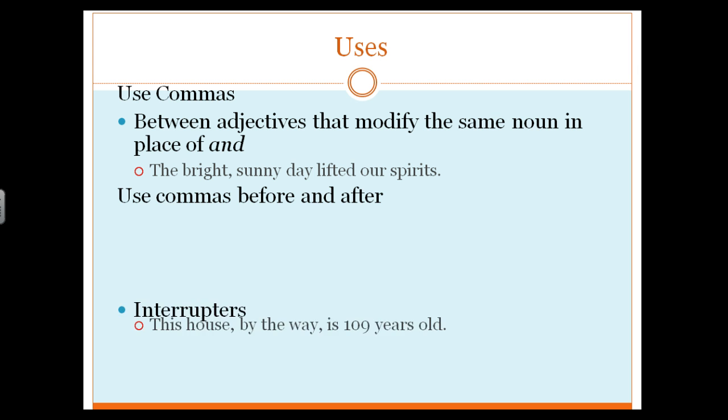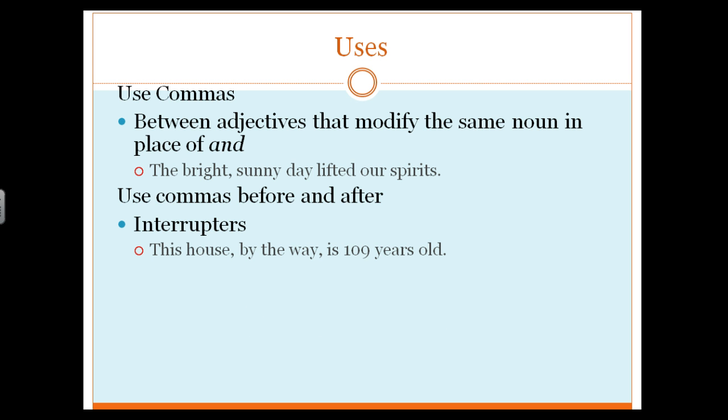We use commas before and after interrupters. Phrases such as by the way, on the other hand, that sort of thing. Especially if it's between simple subject and the predicate. Great place for us to go ahead and drop interrupters in. Again, they're called interrupters because they interrupt the phrase. They're great for voice and establishing style of a writer, but not necessary in terms of the grammar.